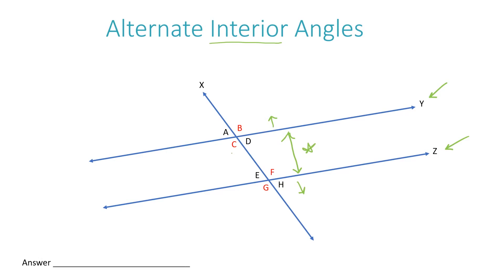So because we're dealing with interior, we're only dealing with angles in the area between the lines. The interior angles I can see are C, D, E, and F. We need to find alternate interior angles — angles on opposite sides of the transversal. So D would be matched with E. One answer would be angle D and angle E. Another answer would be angle C and angle F — they alternate.